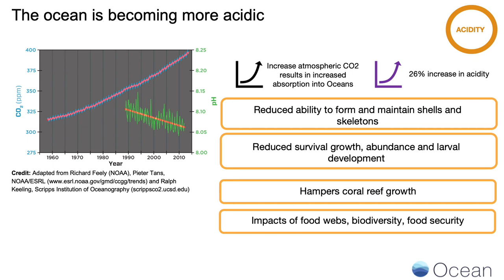Finally, the ocean is becoming more acidic. Increases in carbon dioxide in the atmosphere mean that more CO2 is exposed to the surface of the ocean, and that carbon dioxide dissolves directly into the ocean and creates carbonic acid. So the more CO2 you have in the atmosphere, the more carbonic acid you have in the ocean. This increases acidity across the board. When you have increased acidity, it's harder for animals to maintain shells and skeletons made of calcium. Acidity affects the functioning of cells and organisms, and can affect growth rates, survival, abundance, and larval development in many ocean organisms.